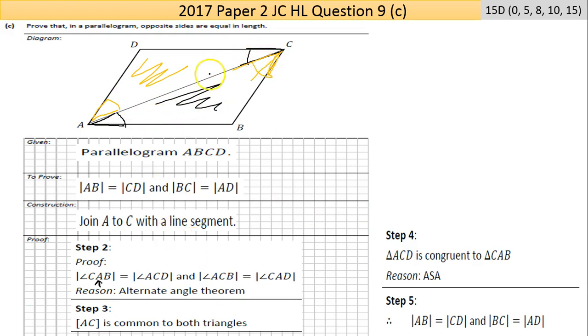Reason: ASA. So Step 5: that proves therefore the length of AB equals CD, and BC equals AD, because those sides...